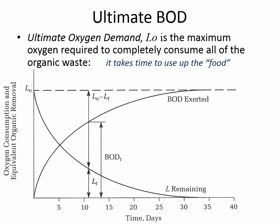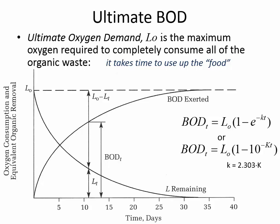L stands for the amount of oxygen demand that there will ultimately be. L₀ is, in the end when it's used up all of the oxygen demand it will need, how much was that? BOD with a subscript T means how much oxygen has been used up until a certain time T. Here are the formulas — we can express them in base E terms or base 10. Base E is associated with the natural log (ln), and base 10 is associated with log. There are two different k's: lowercase k associated with base E units, and capital K associated with base 10. Some references give k values in base E units and some in base 10, so you have to be able to convert between the two — they differ by a factor of 2.303.